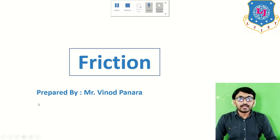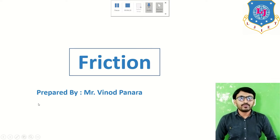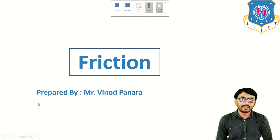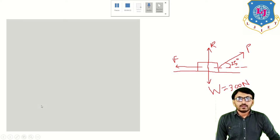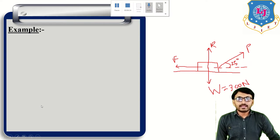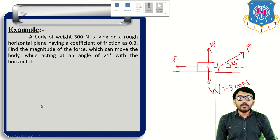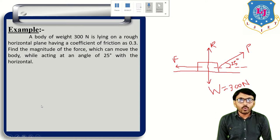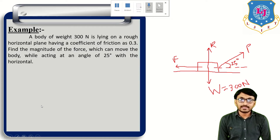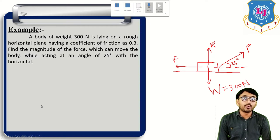Hello, myself Vinod Panara and in this lecture we discuss about friction — an example of friction. A block of weight 300 Newton is lying on a rough horizontal plane having coefficient of friction 0.3.